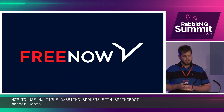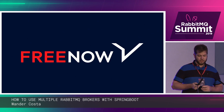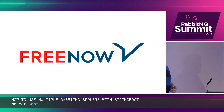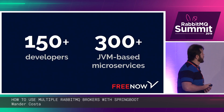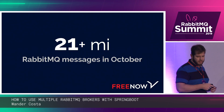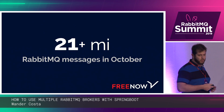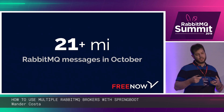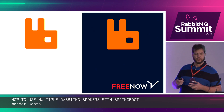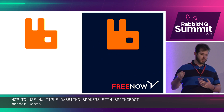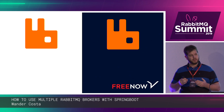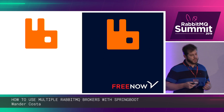Let me get back a little. As I mentioned, I work in a company called FreeNow, in Hamburg. I moved from Brazil to Germany last year, and the company was called MyTaxi at that time. Eventually, in the middle of this year, we were rebranded to FreeNow. Some numbers: we've got over 150 developers, we run over 300 JVM-based microservices, and last month we handled over 21 million messages in RabbitMQ in the live cluster. At the end of last year, we had a different requirement which was to introduce another RabbitMQ, another broker, and we wanted this new broker to be shared among some of the environments that we had.